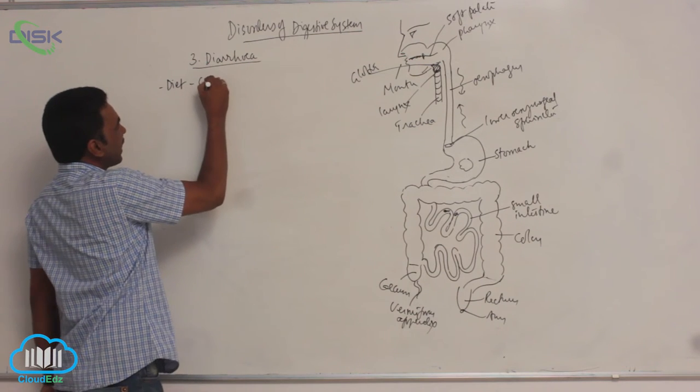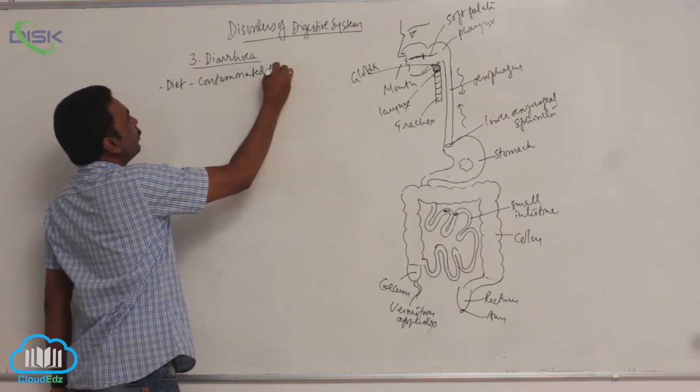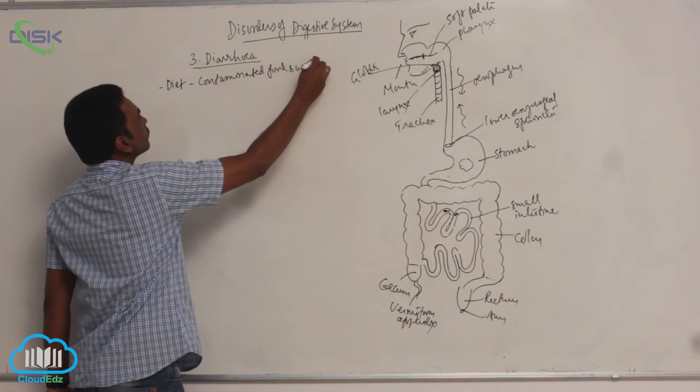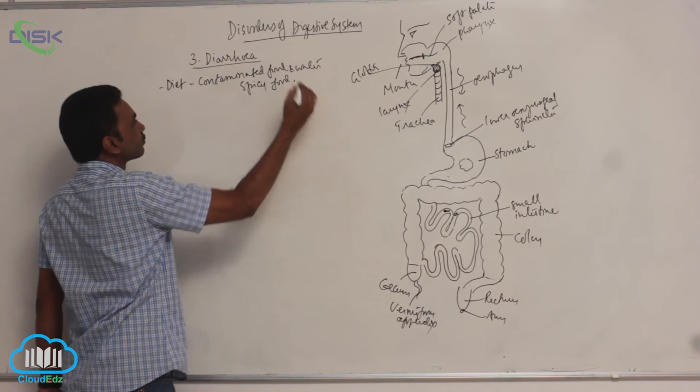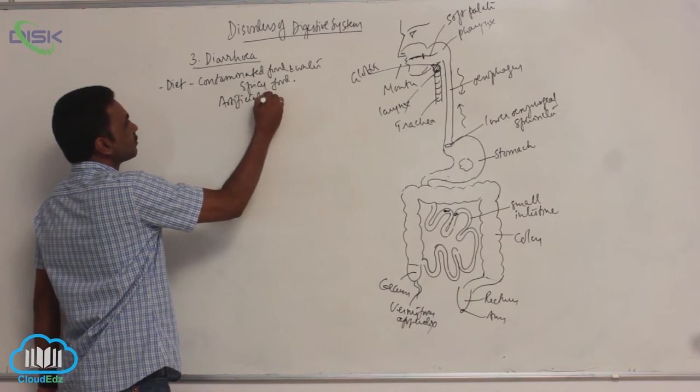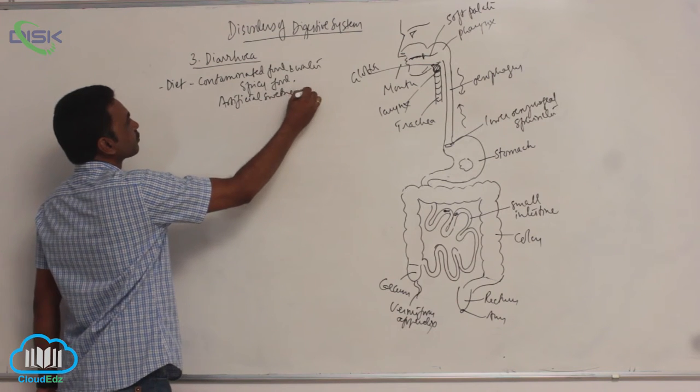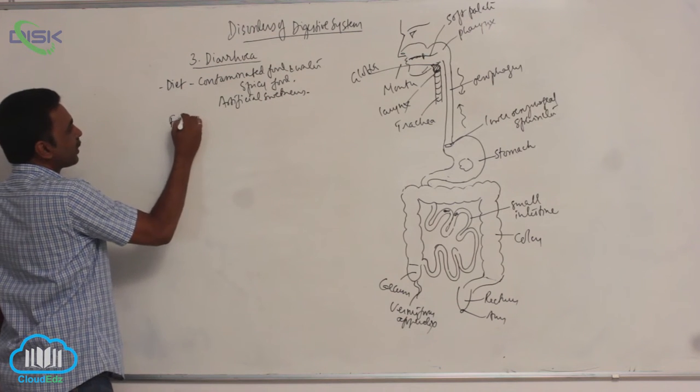Diet includes contaminated water, food and water, spicy food, artificial sweeteners, and food intolerance.